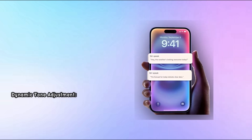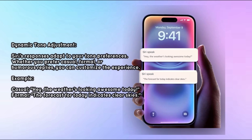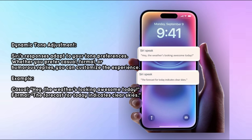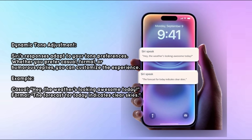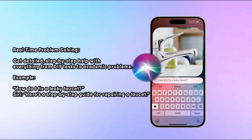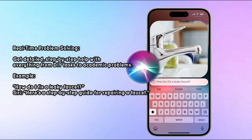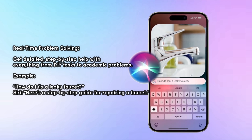Siri's responses adapt to your tone preferences — whether you prefer casual, formal, or humorous replies. For example, a casual response might say 'Hey, the weather's looking awesome today!' while a formal one states 'The forecast for today indicates clear skies.' You can also get detailed, step-by-step help with everything from DIY tasks to academic problems, such as asking 'How do I fix a leaky faucet?' and receiving a complete repair guide.